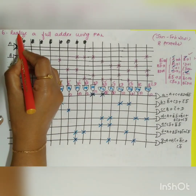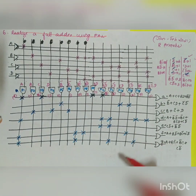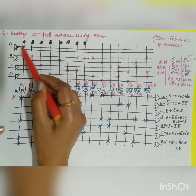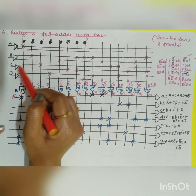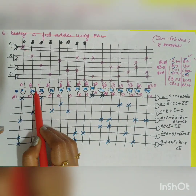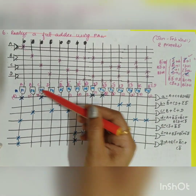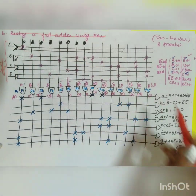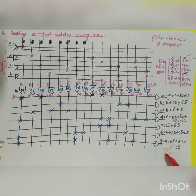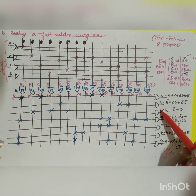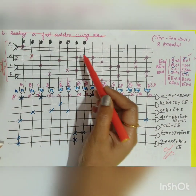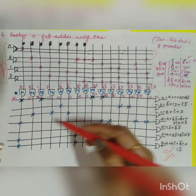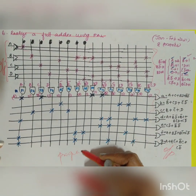Now you can draw the PLA diagram. The inputs are A, B, C, D and their complements: Ā, B, B̄, C, C̄, D, D̄. A PLA is formed by an array of AND gates followed by an array of OR gates. The outputs are a, b, c, d, e, f, g. A cross mark in the diagram signifies that both the AND gate and OR gate arrays are programmable.